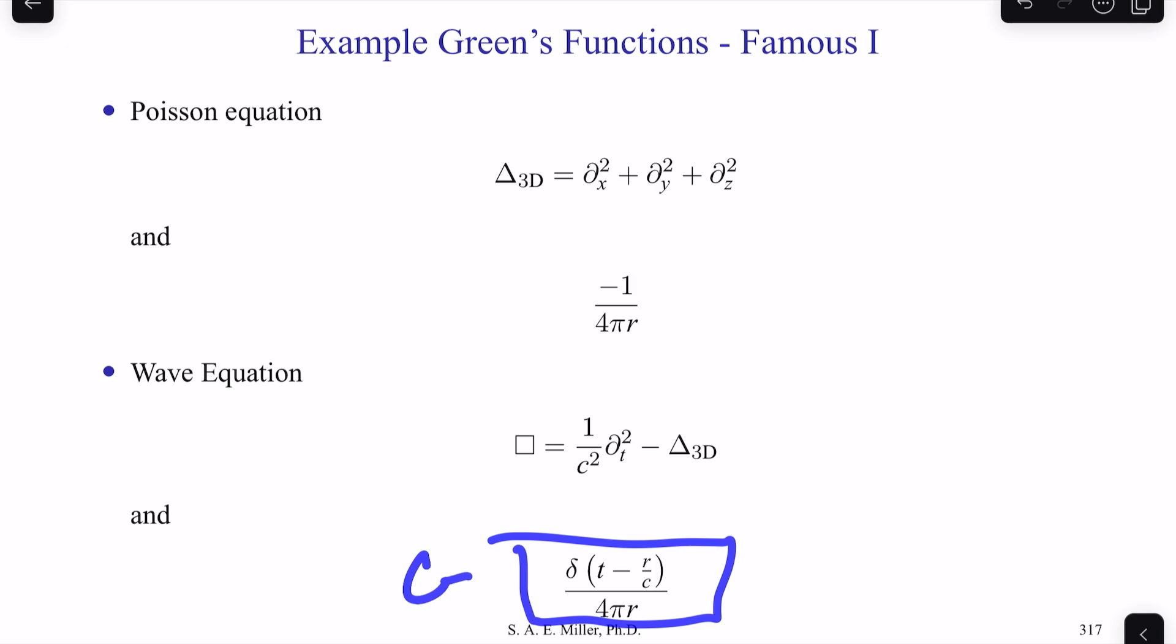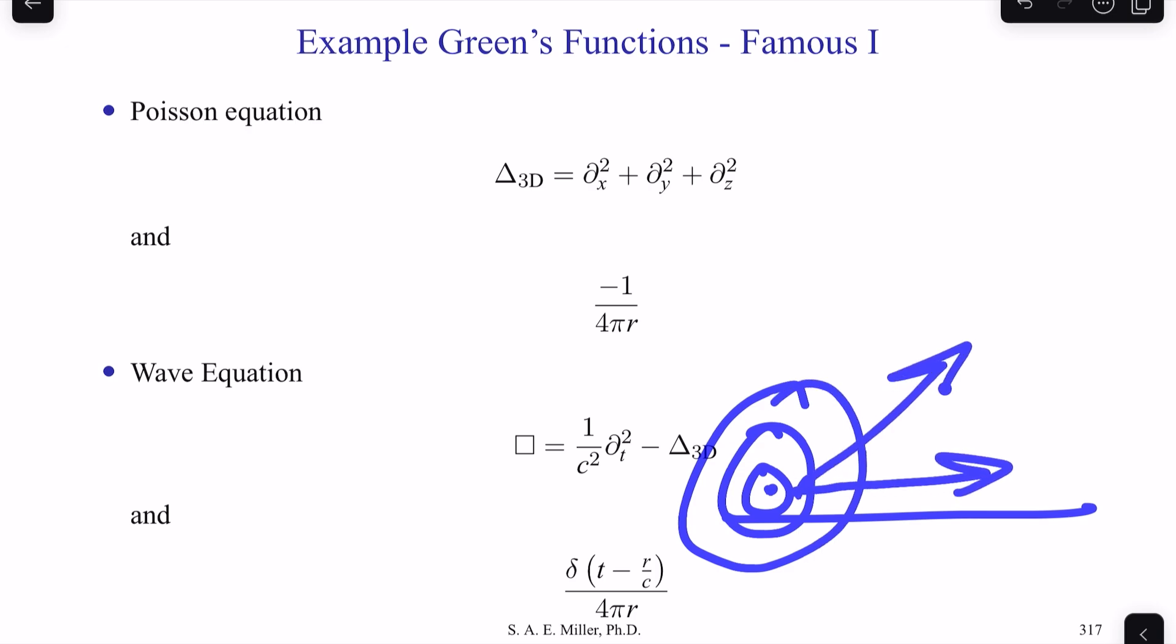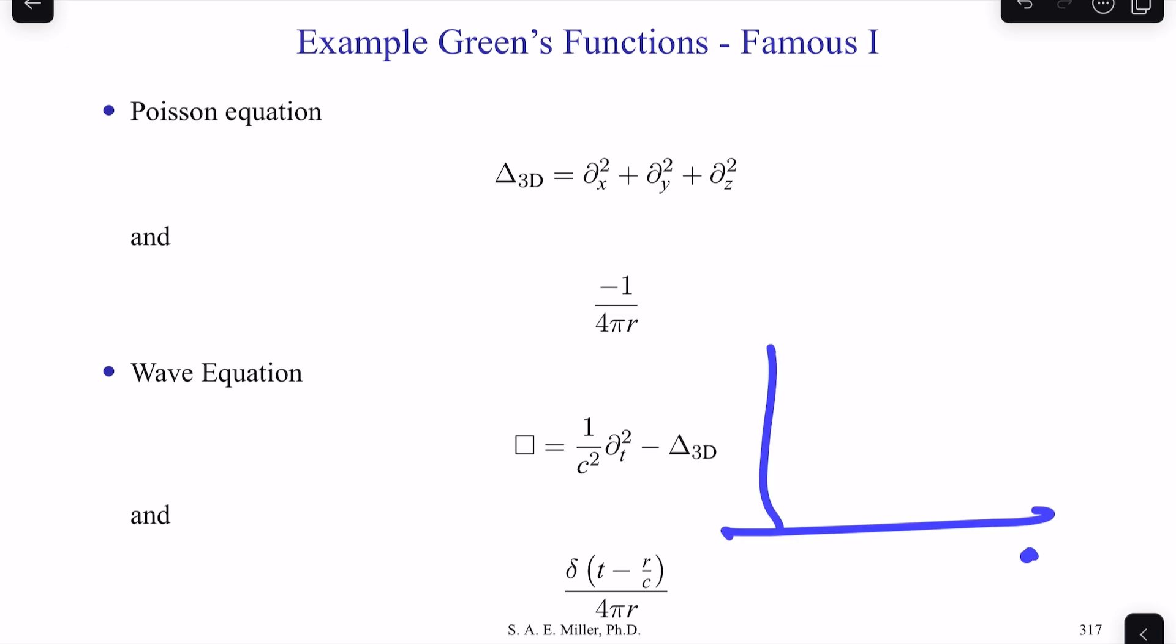is the Dirac delta function times (t minus R/c) over 4πR. So this is like an acoustic wave. If we put a pulse here, it comes out as spheres, and it'll go in every direction. The Dirac delta function represents the point, or the source. 4πR represents the decay. So the function decays as R, and say the amplitude P, and it'll go like this. 1 over R, R to the negative 1.